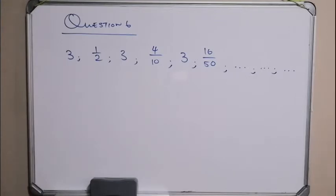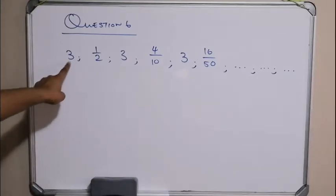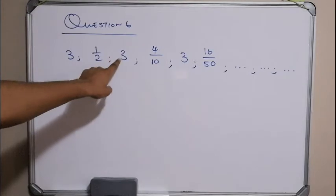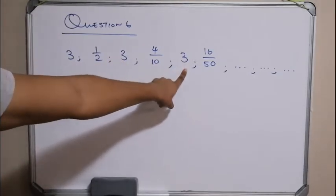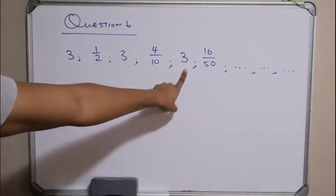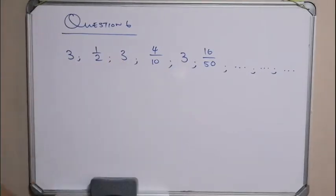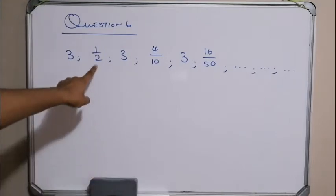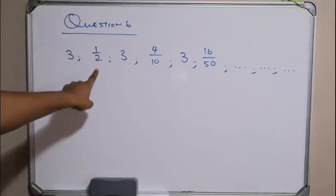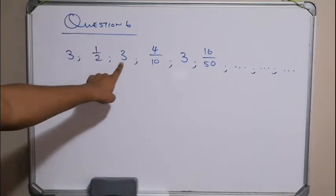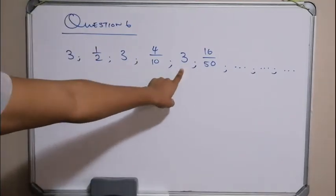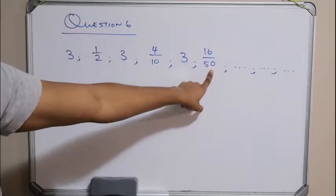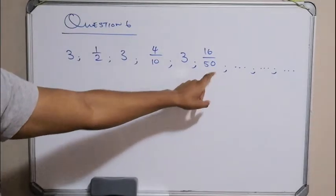The linear pattern is the 3, skip 1, 3, skip 1, 3. And the geometric one is obviously: half, skip 1, 4 over 10, skip 1, 16 over 15.